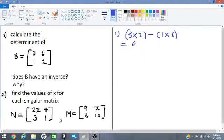That's what we get. 3, 2's are 6, subtract 1, 6 is 6 and we get 0. So our determinant is 0, right?